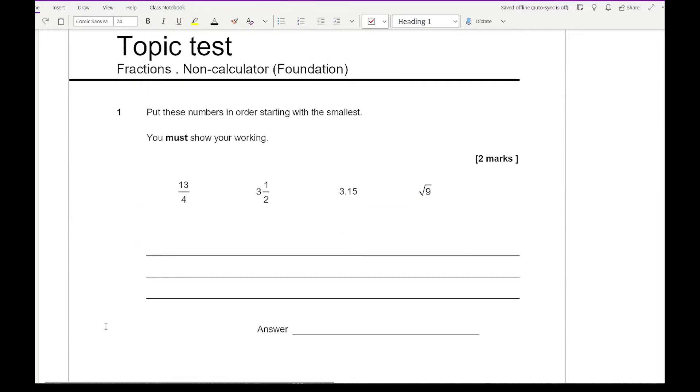Looking at question one, it says put these numbers in order starting with the smallest and you must show your working. When ordering fractions, try and convert them into decimals. So let's have a look at the first one.